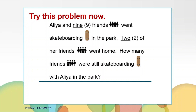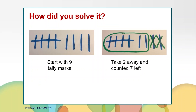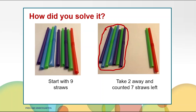Everyone had some great answers. Let's take a look at some of the ways you solved the problem. Maybe you made nine tally marks for the nine friends skateboarding, then crossed off two tally marks for the two friends that went home, and counted seven tally marks for the seven friends skateboarding with Aaliyah. Maybe you counted nine straws for the nine skateboarding friends, then took two straws away for the two friends that went home, and counted seven straws left — meaning seven friends are still skateboarding with Aaliyah.